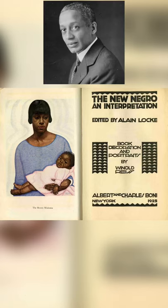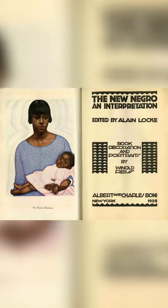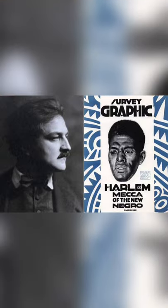African American art history really began to take shape in 1925 when Alain Locke published his seminal text, The New Negro, an extended version of the March 1925 issue of Survey Graphic Magazine, which served as the substantiating publication of the Harlem Renaissance.